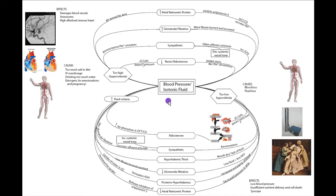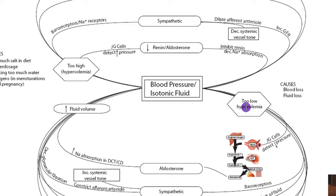Our first question is usually why is this important? It provides the opportunity to talk about why we're combining blood pressure with isotonic fluid. If there's an increase or decrease in isotonic fluid, this isn't really going to affect the concentrations of ions, so the major effect is on blood pressure. We refer to it as hypovolemia when blood pressure or isotonic fluid is too low, and hypervolemia when it is too high.